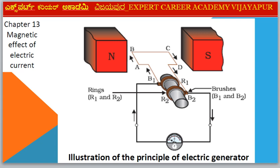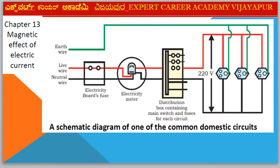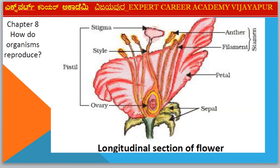Chapter 13: Magnetic Effect of Electric Current. Diagram: Illustration of the Principle of Electric Generator. Next diagram: One common Domestic Electric Circuit.